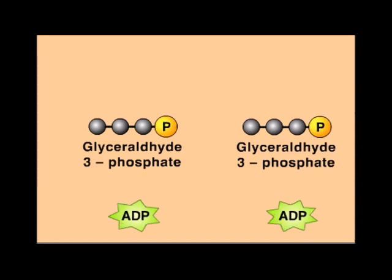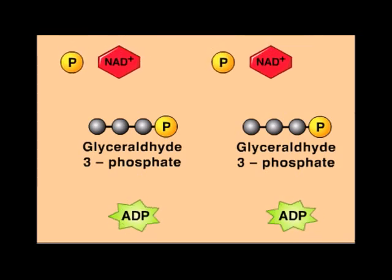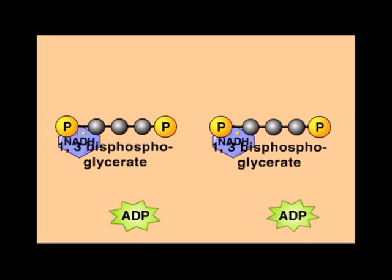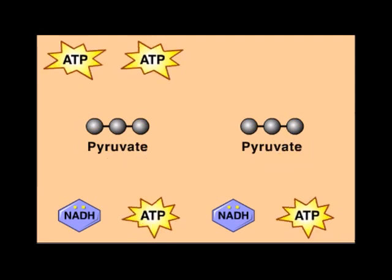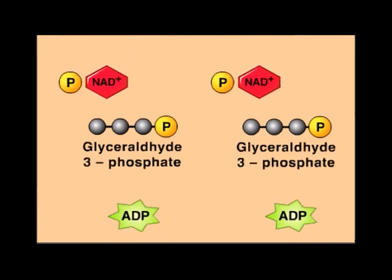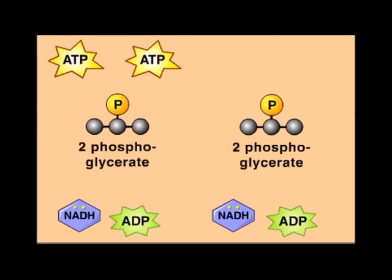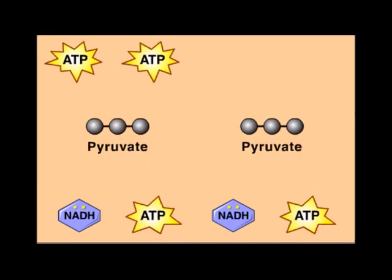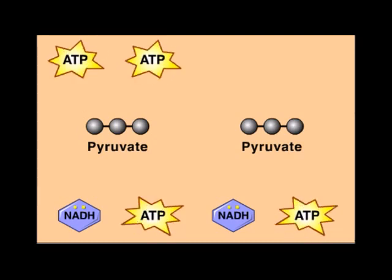Another enzyme then turns the 6-carbon glucose phosphate into 2 sets of 3-carbon sugar phosphate. Finally, phosphate ions and NAD ions fuse with the 3-carbon sugar phosphate, turning it into pyruvates and the reduced form of NAD, which is NADH. The ADP molecules in the cytoplasm fuse with the remaining phosphate ions from the pyruvate and turn into 4 ATP molecules. Remember: starting with 1 molecule of glucose, glycolysis yields 2 molecules of pyruvate, 2 ATP, 2 NADH, and it does not require oxygen.